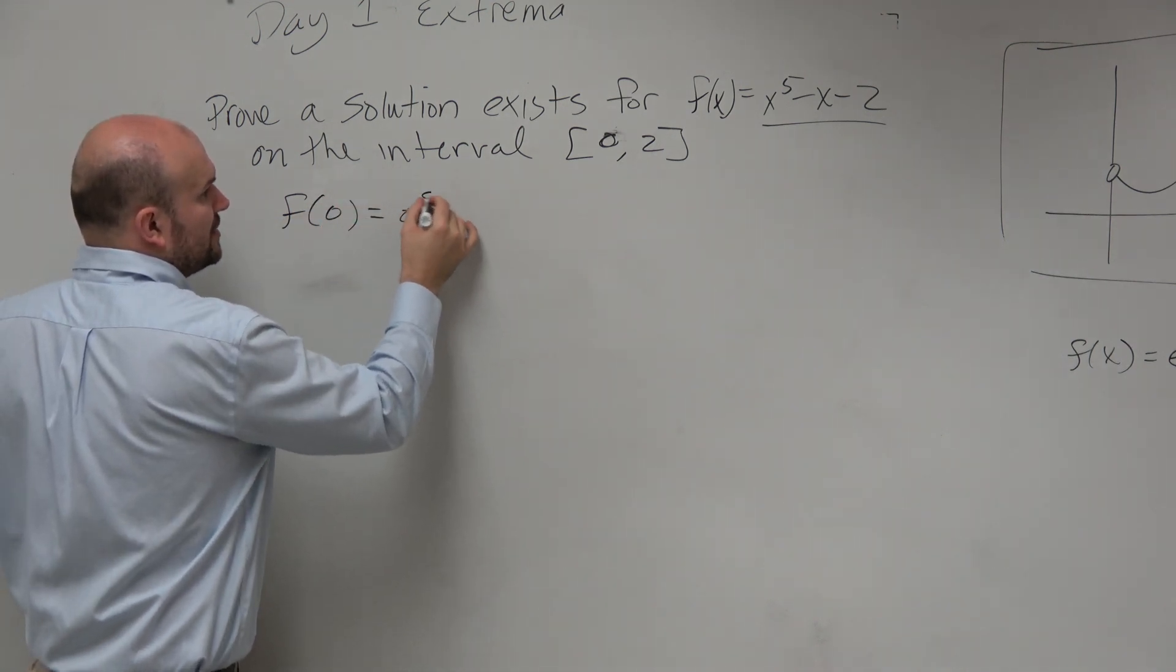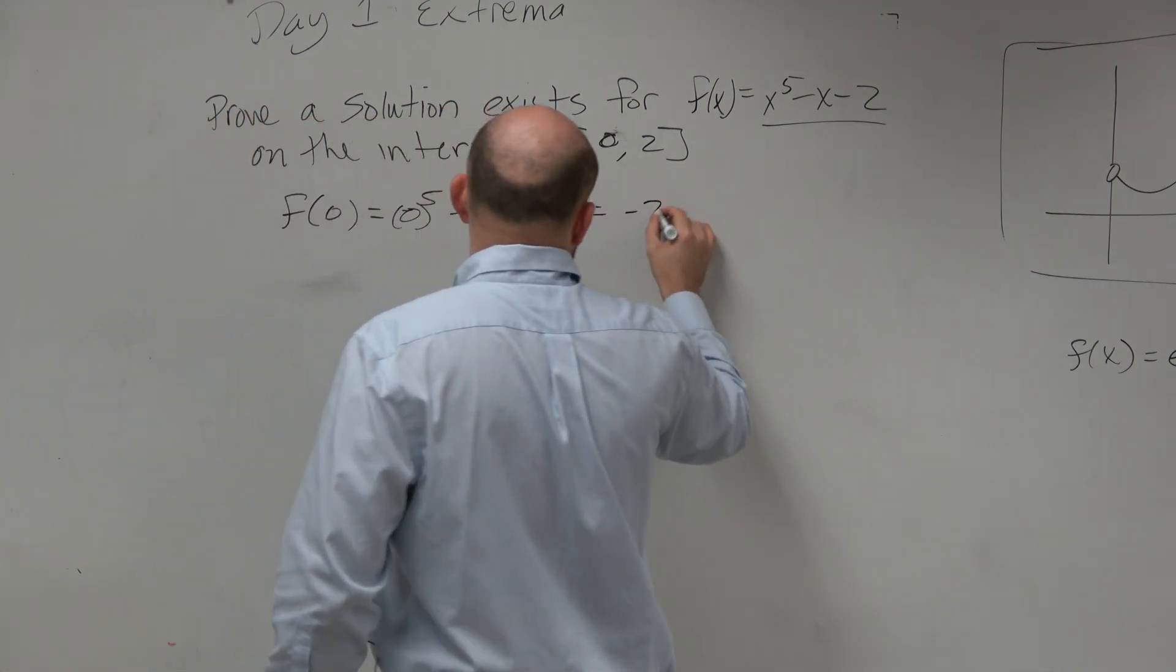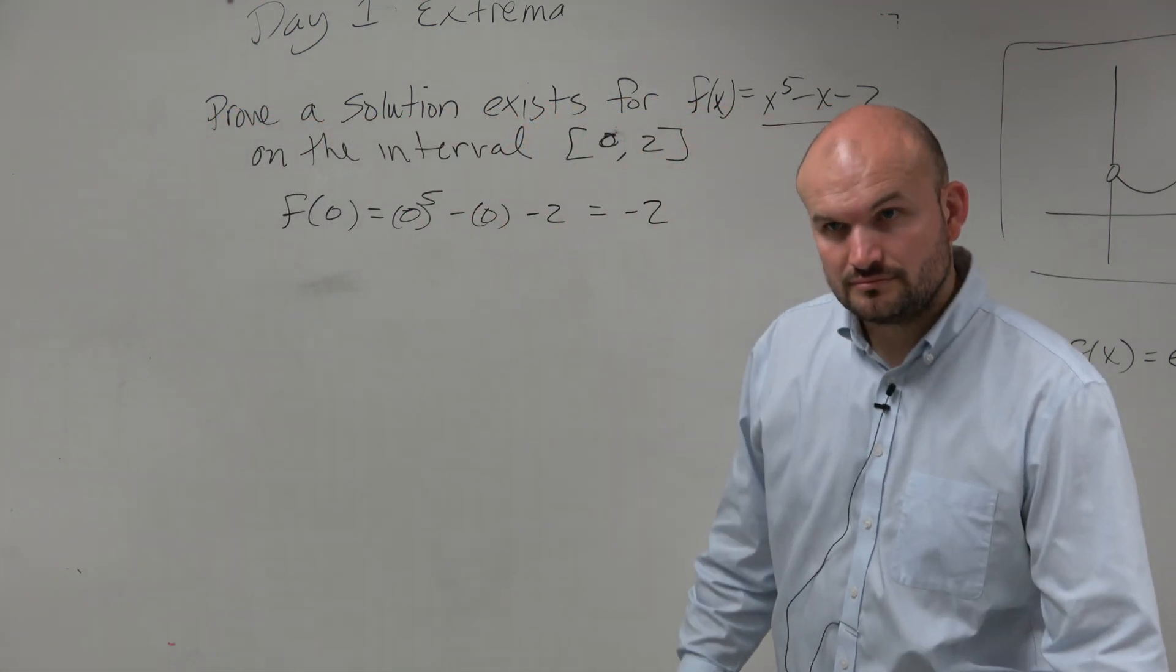So f of 0 equals 0 to the fifth minus 0 minus 2, which equals negative 2.